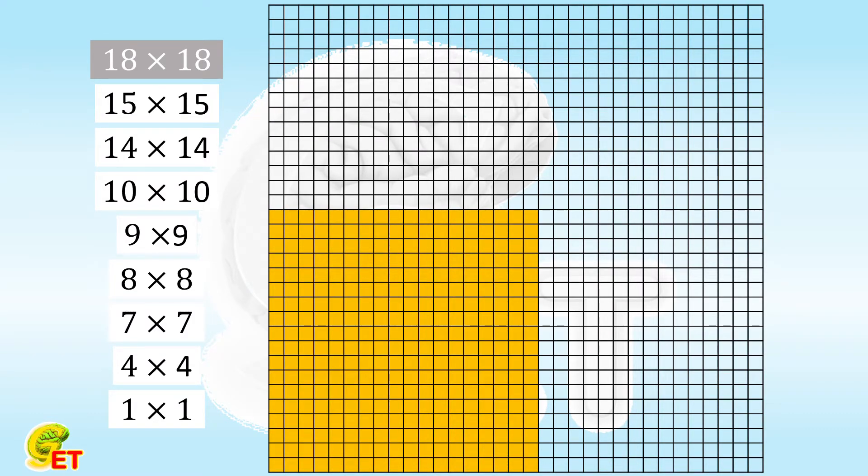Right to the biggest one, there are 15 columns left, so we put the 15 by 15 one over there. Above the biggest one, there are 14 rows left, so we put the 14 by 14 one above it.